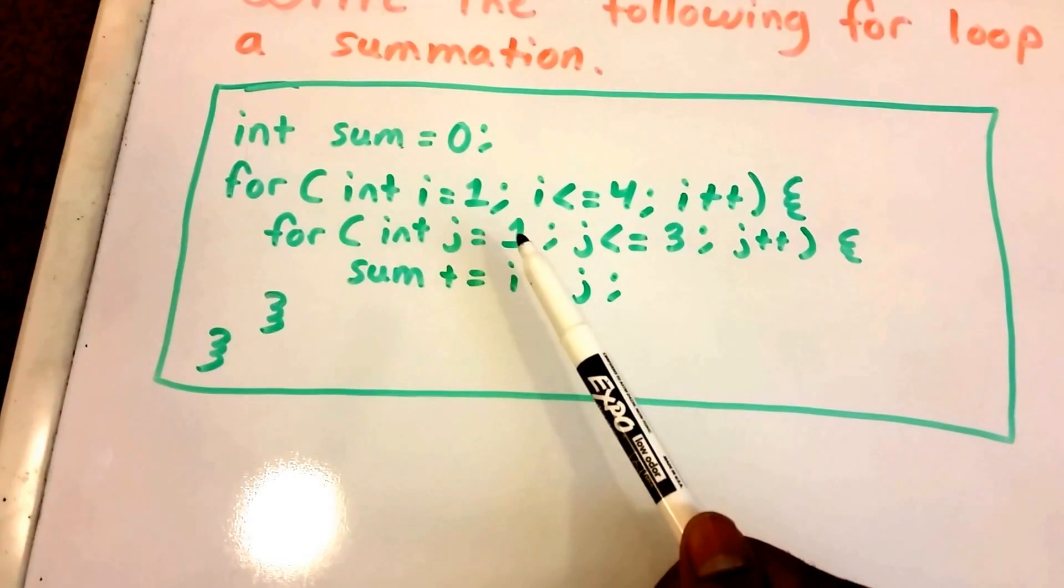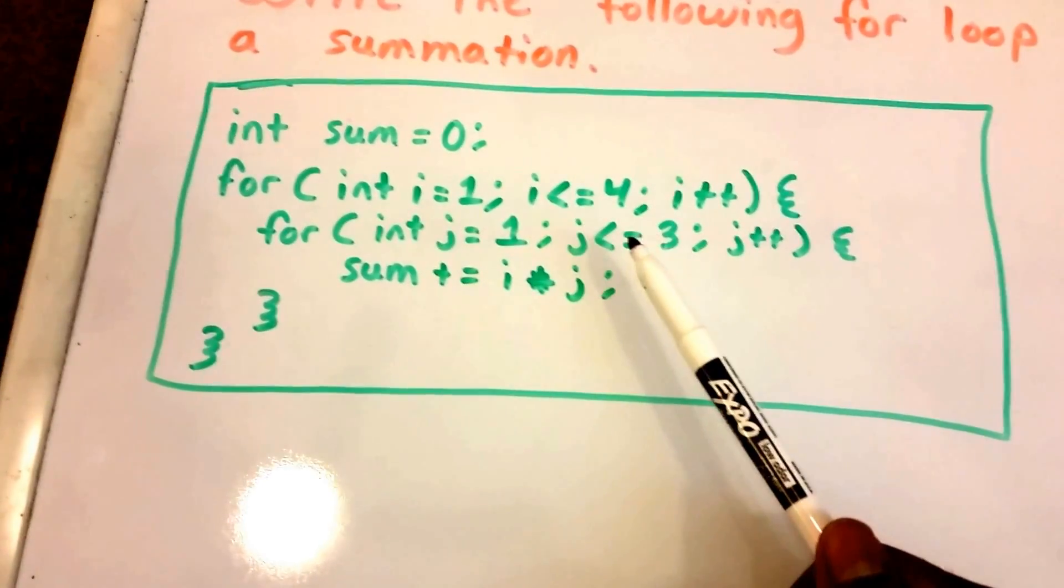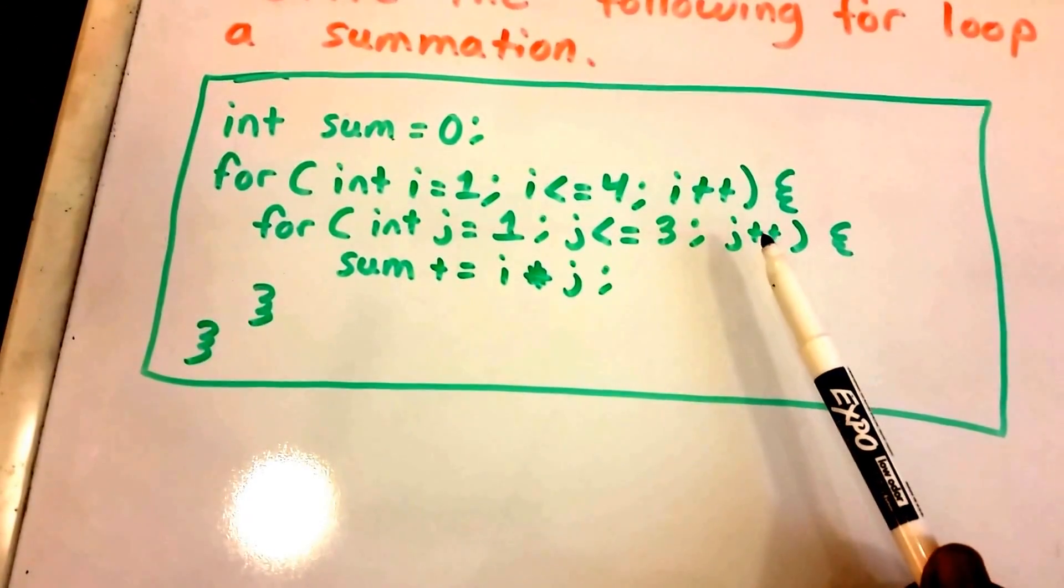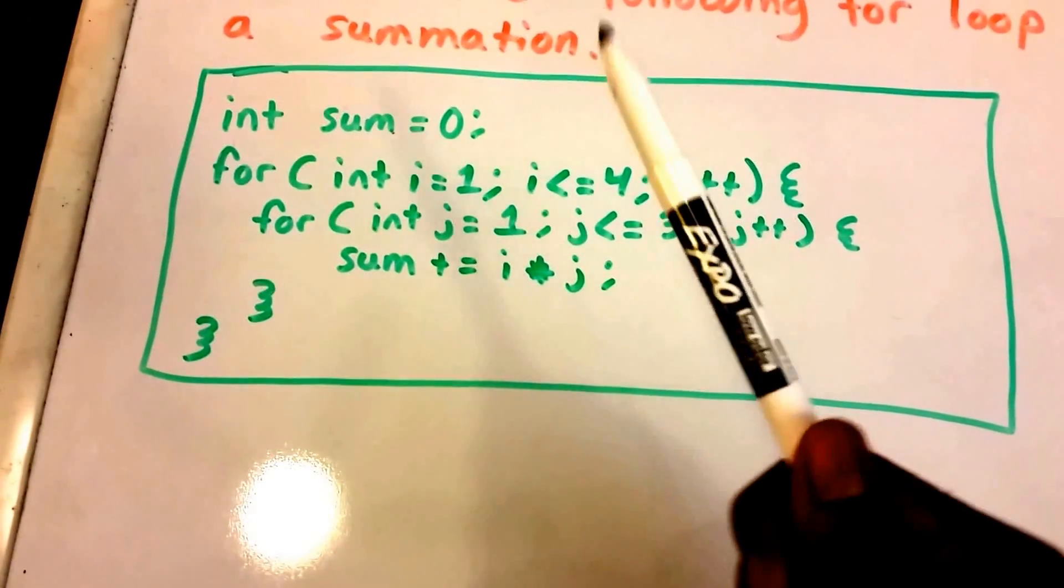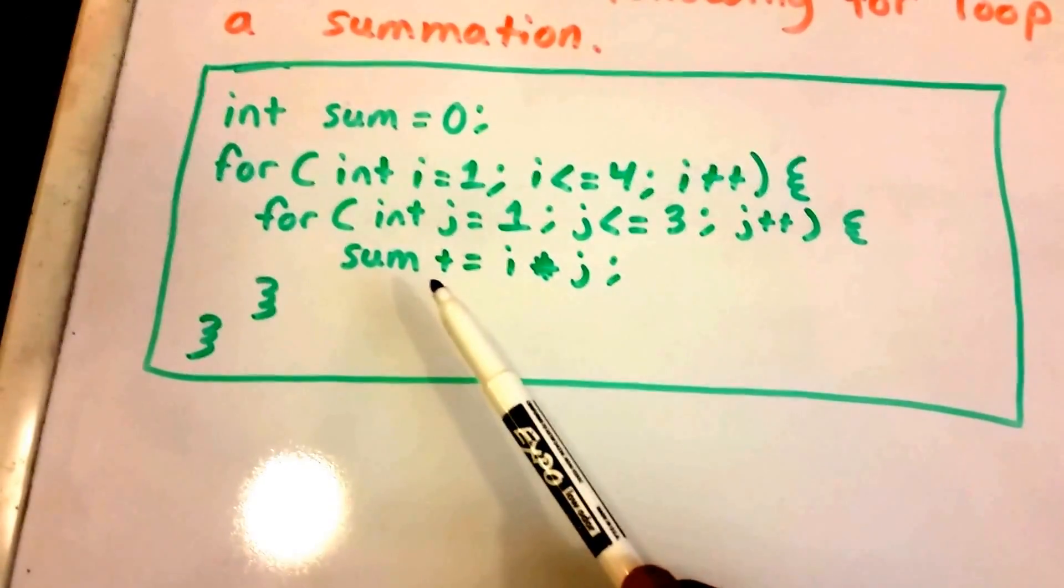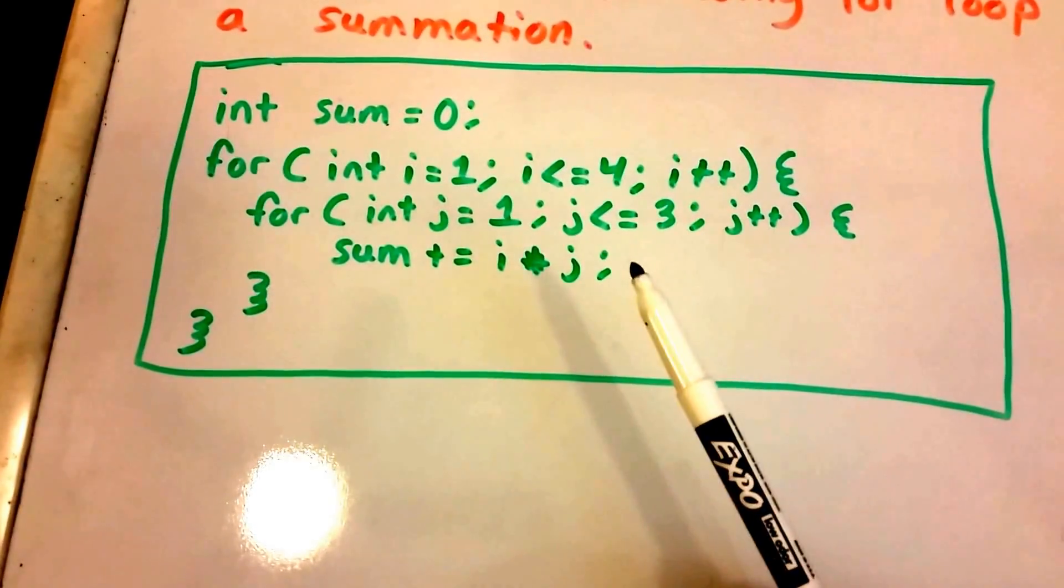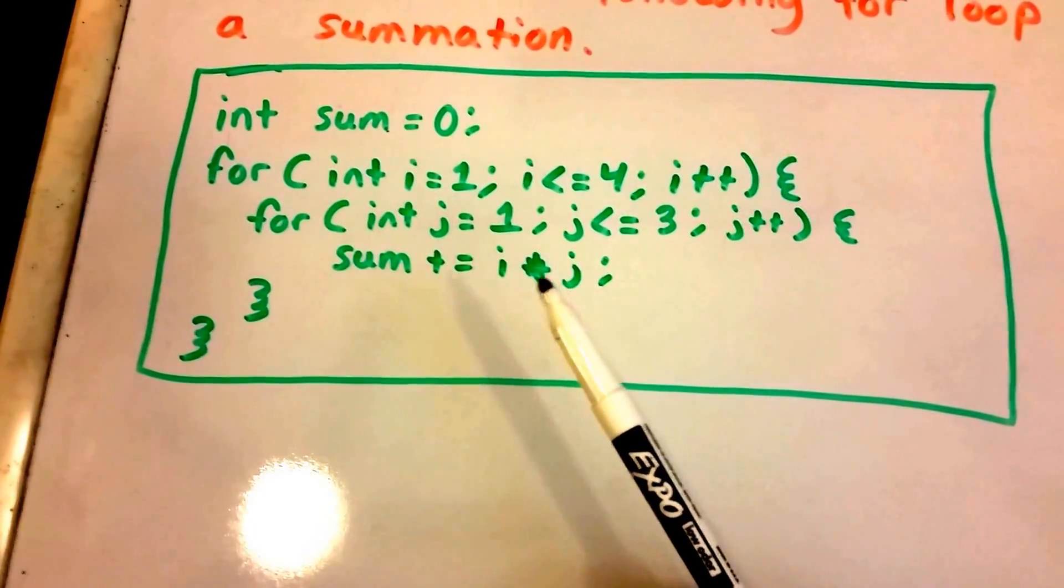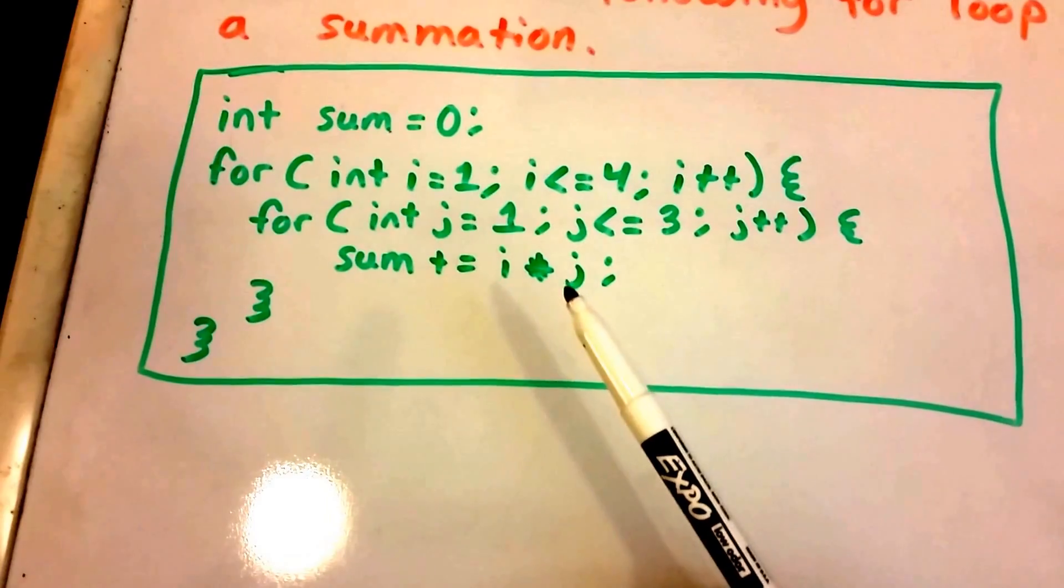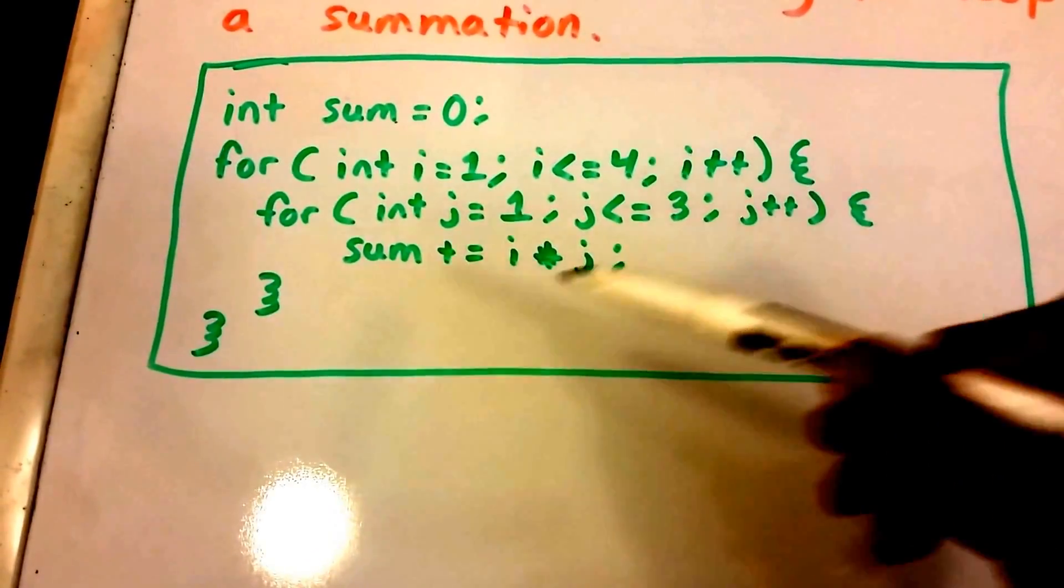And then within this loop is another loop, an inner loop, and this for loop says j equals 1, it's going to run while j is less than or equal to 3, and then j is going to increment by 1 each time. And then we have our sum here and we have sum plus equals i times j, so this is really just saying sum equals sum plus i times j.